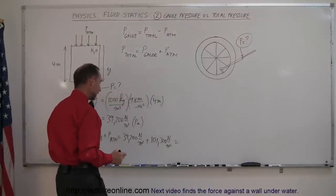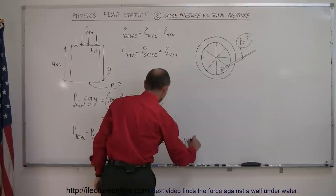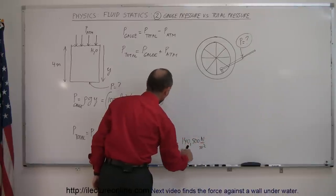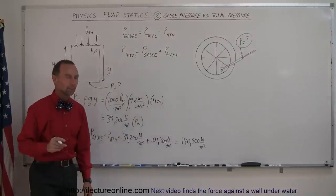But when we add those two together, we get 140,500 newtons per square meter, and that would be the total pressure at the bottom of the pool.